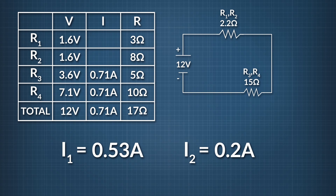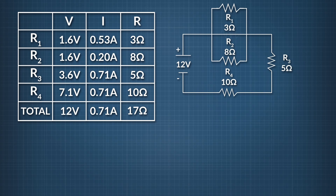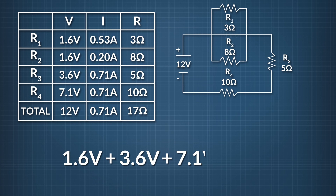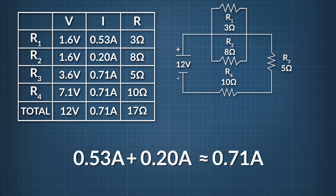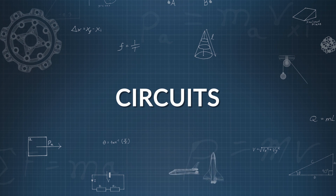With that, we can complete our VIR chart for this complex circuit. We can now specify the voltage across any resistor, we have all resistor values, and we know how much current runs through any part of the circuit. The last thing is to check that our solutions make sense. Adding individual voltages along any current path: 1.6 plus 3.6 plus 7.1 volts equals 12 volts — within rounding error, it matches. And the total current across the parallel branches: 0.53 plus 0.20 amps equals about 0.71 amps. That's a closer look at circuits. For more of Physics in Motion, go to our homepage where the entire series is available.